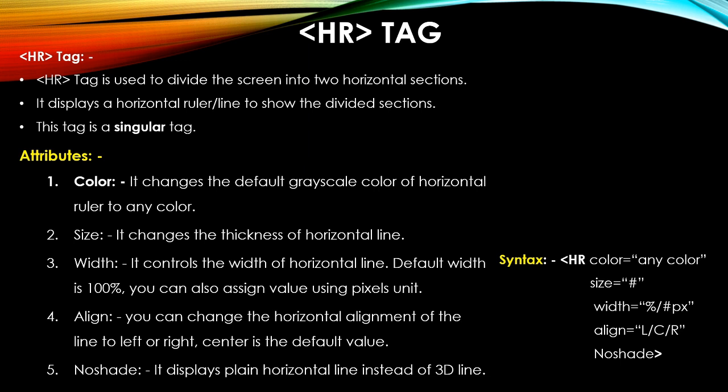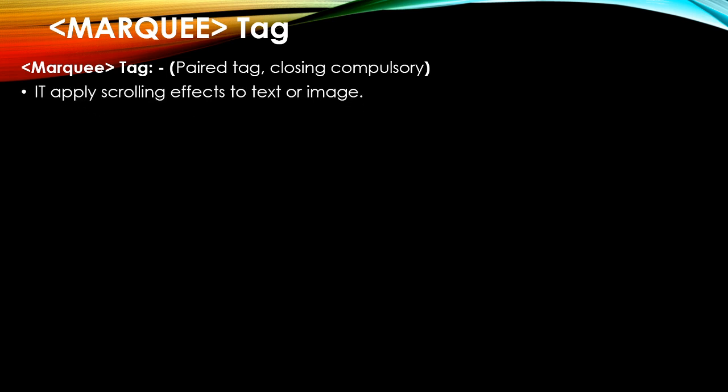The syntax of the hr tag includes: color, size, width, align, and noshade attributes. The next important and popular tag is the marquee tag. This marquee tag scrolls the text from a given direction. This tag is a paired tag and its closing is compulsory.